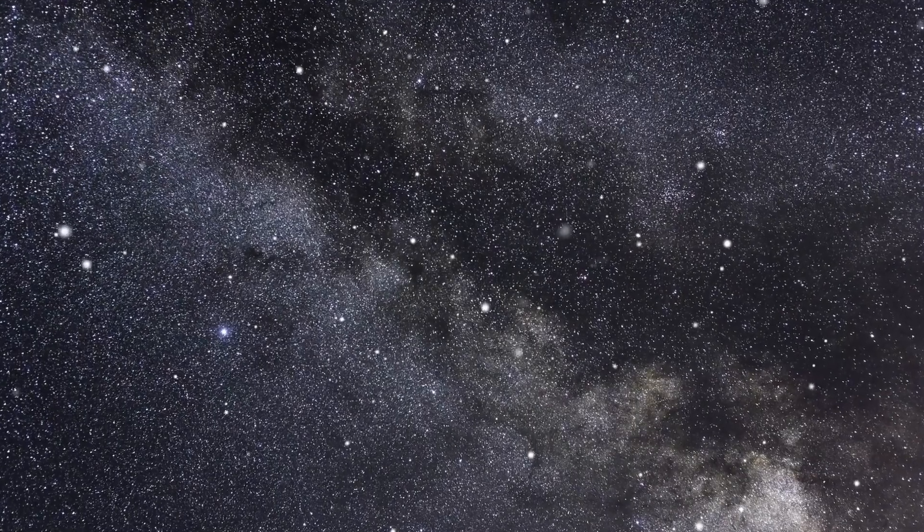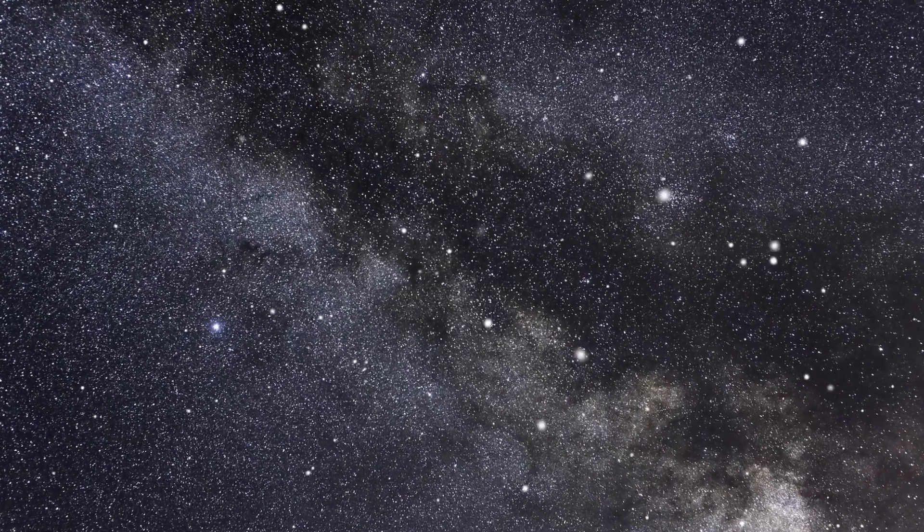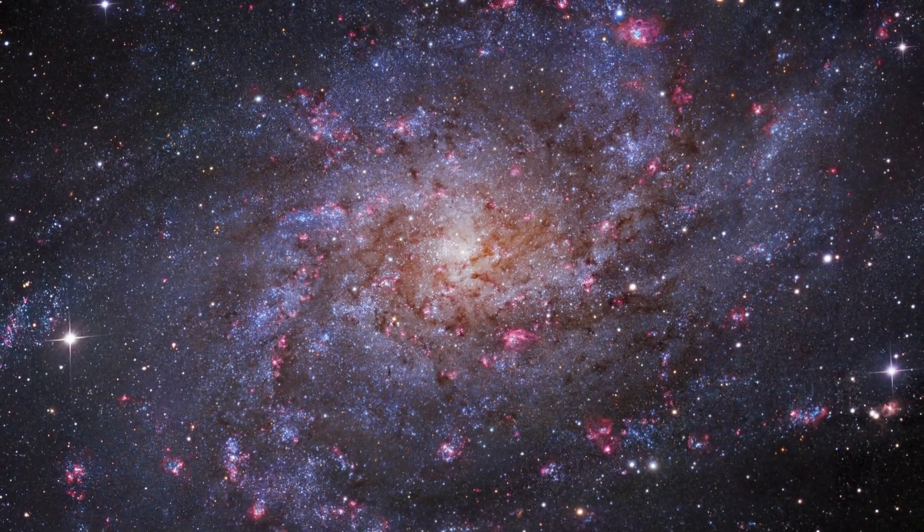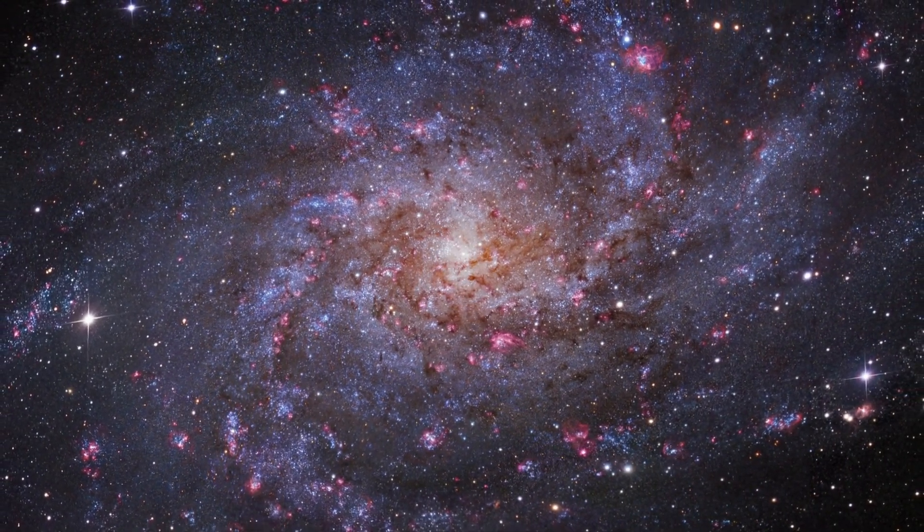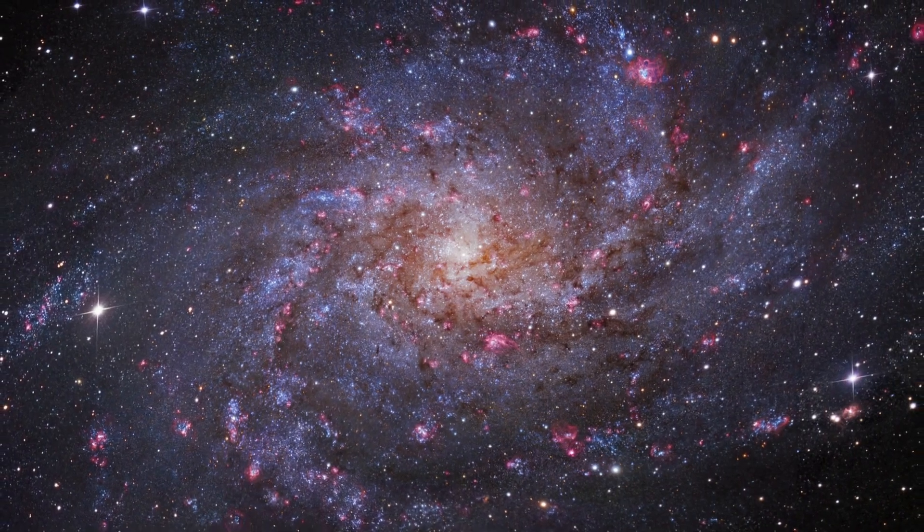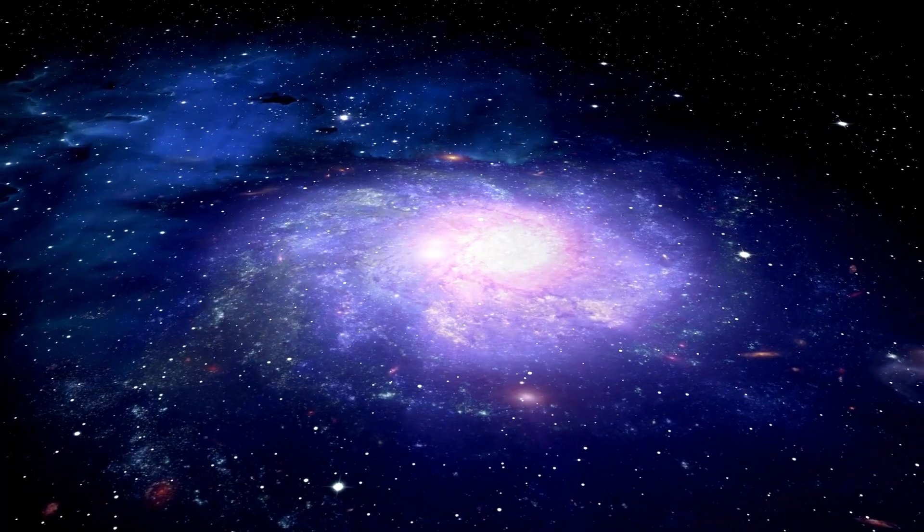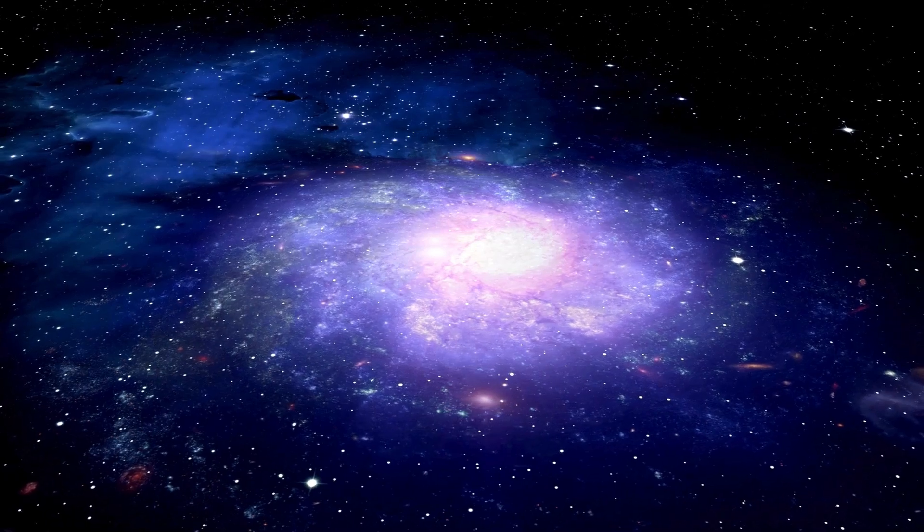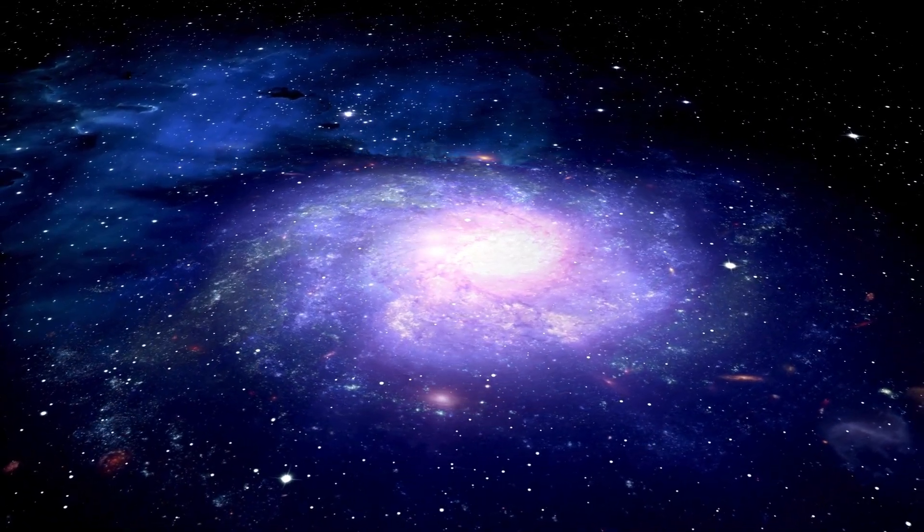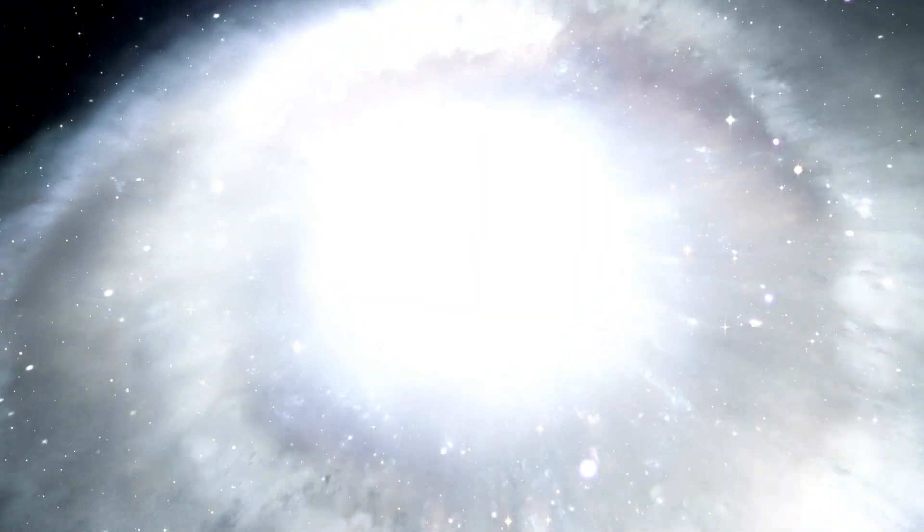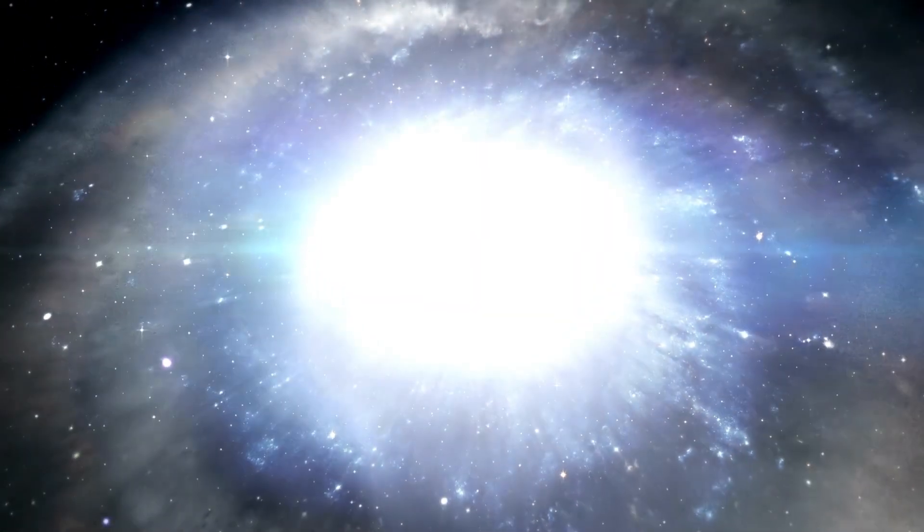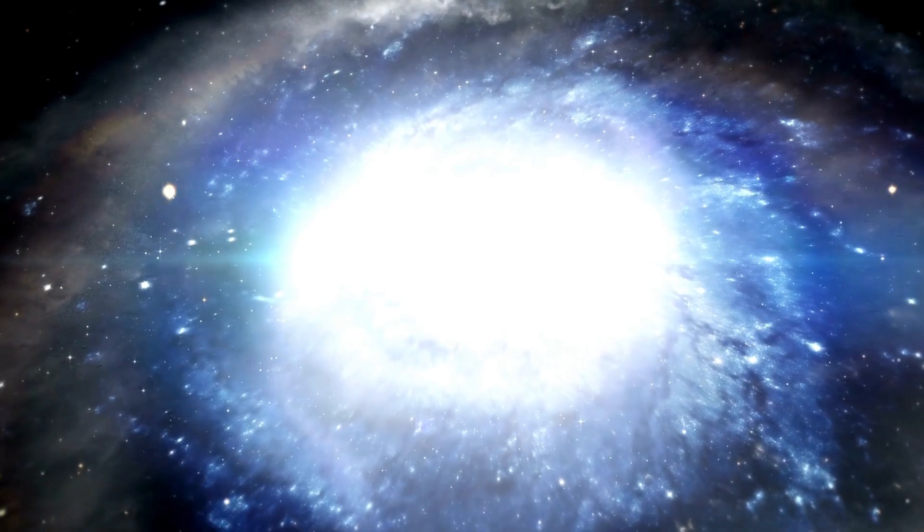This scenario is impossible since Proxima b orbits so closely to its host star. There is a chance that it might be tidally locked, meaning one side of the planet always faces the star while the other is in perpetual night. A civilization living on a tidally locked planet might need to focus on illuminating infrastructure and use very bright orbital mirrors to reflect sunlight from the day side to the night side of the planet. All these are speculations made by Tabor and Loeb.